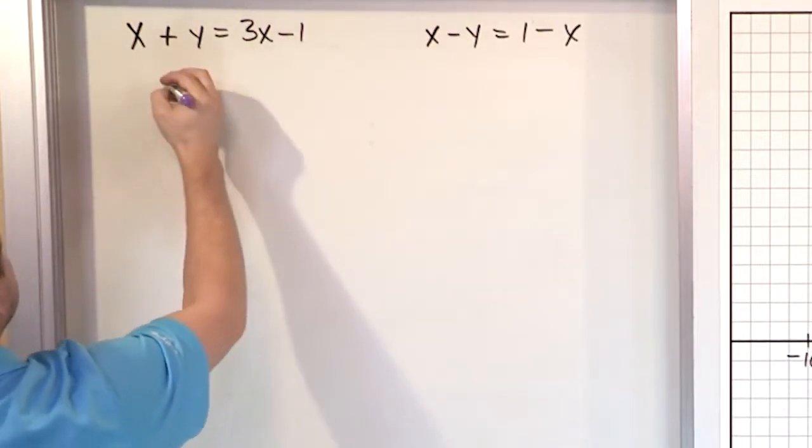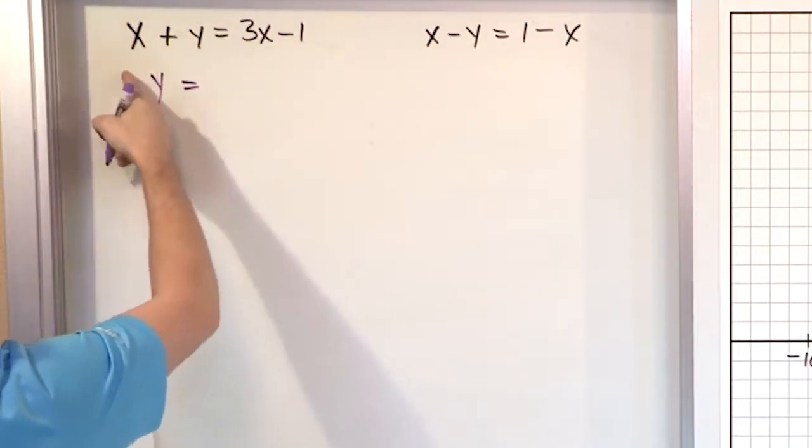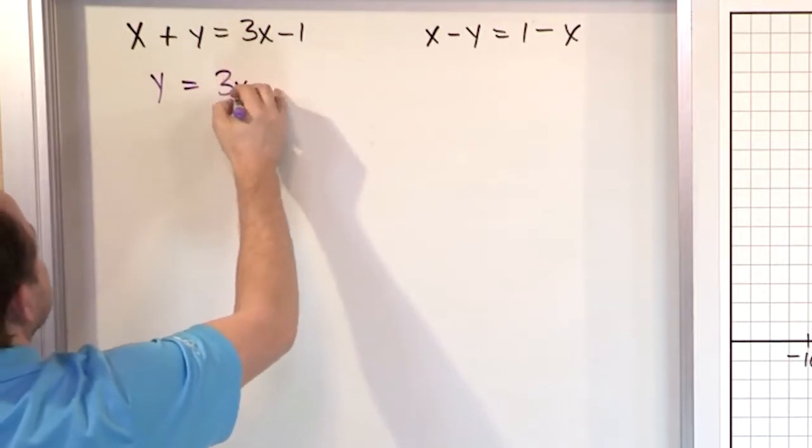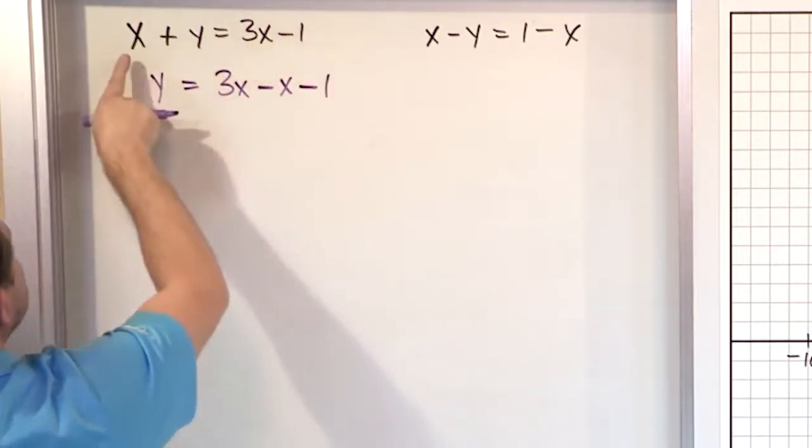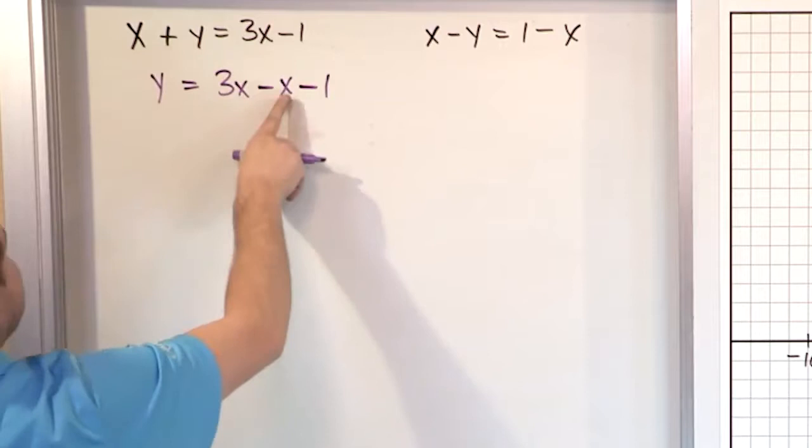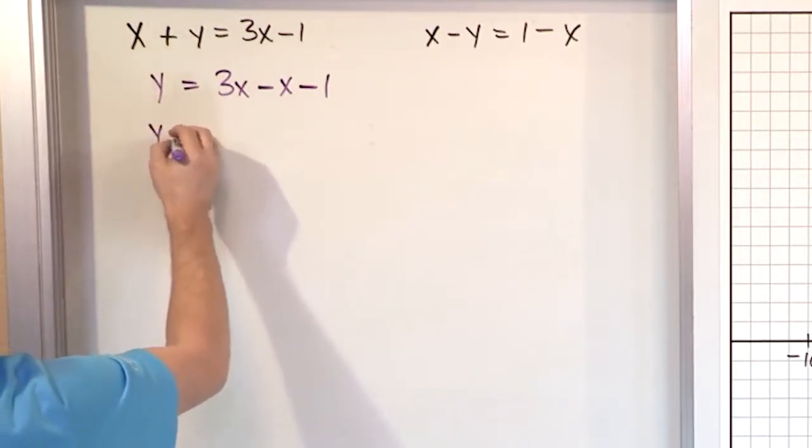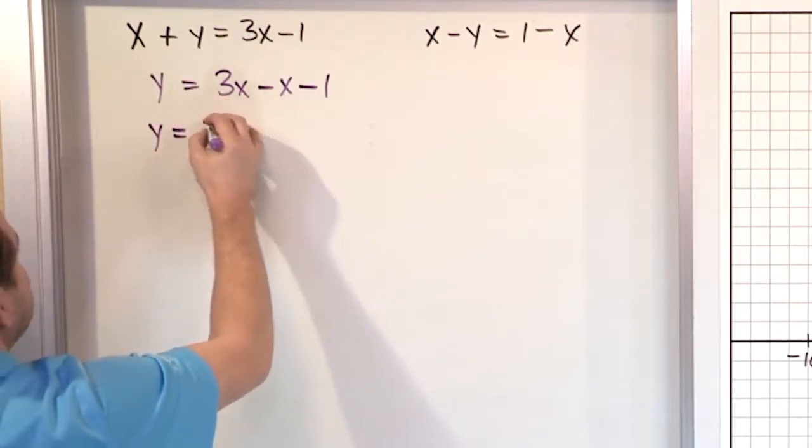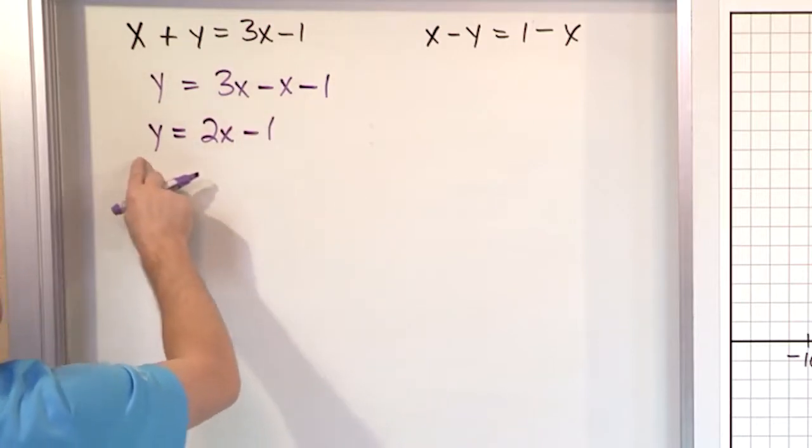So let's leave the y on this side because that's where we want them, and let's move the x to the other side. So you have 3x minus x minus 1. All I did was subtract x from the left and subtract x from the right. And when I carry out the subtraction, 3 minus 1 is 2x minus 1. Now this looks an awful lot like a line, right?